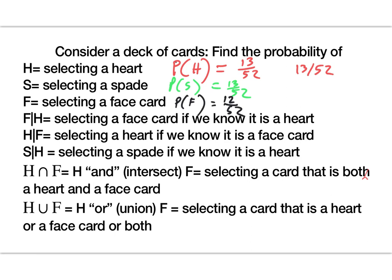So this would be read as the probability of a face card given it's a heart, and that's how we would write it. When you're talking about face card given heart, 'given heart' means I've redetermined — I'm no longer talking about a deck of cards, I'm only talking about hearts. Whenever we have a given statement, you throw out everything else; the given means this is all we're talking about. Of the hearts, how many are face cards?